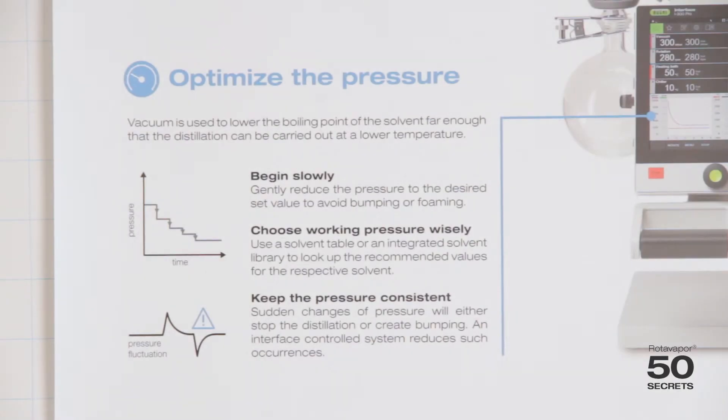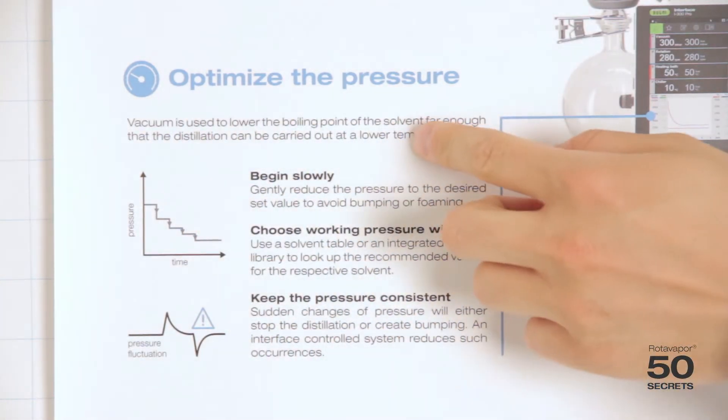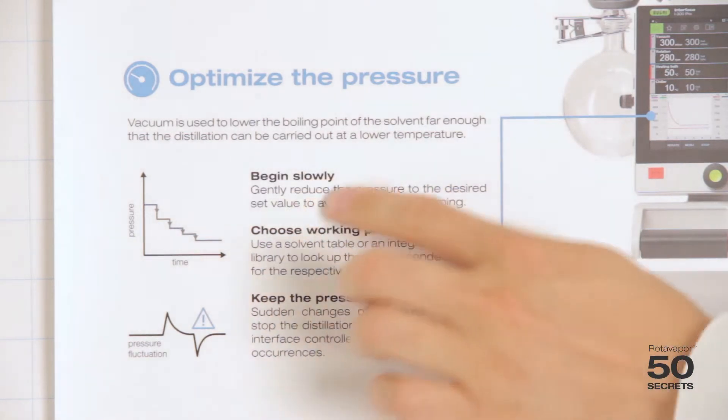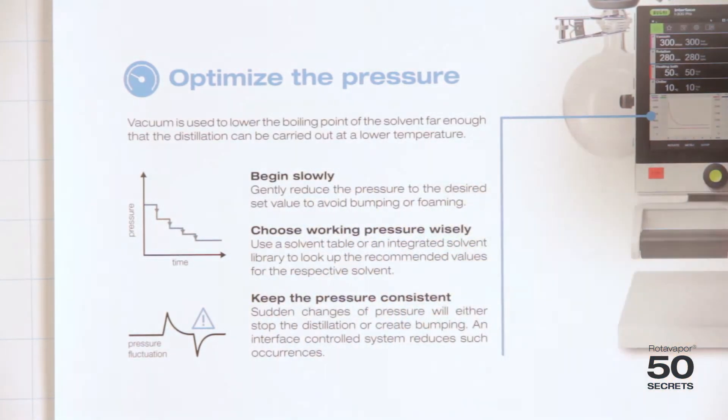The second secret talks about optimizing the pressure, and there are three things to consider. The first one is you begin slowly. What that means is that you decrease the pressure slowly.